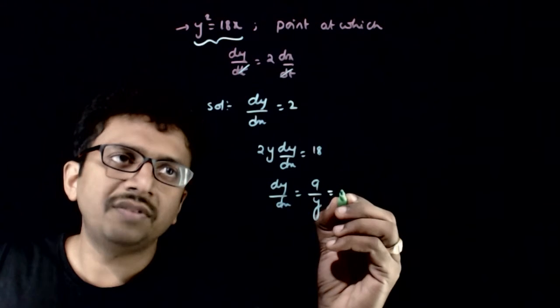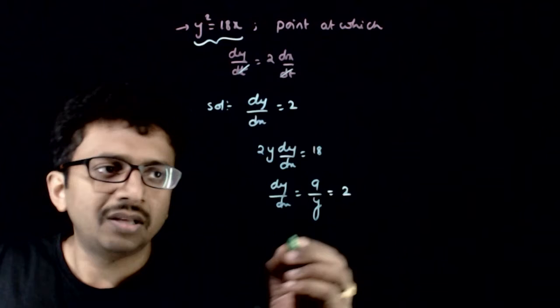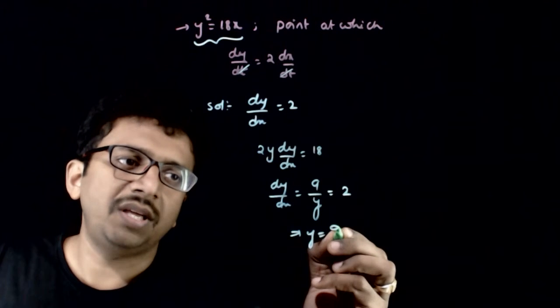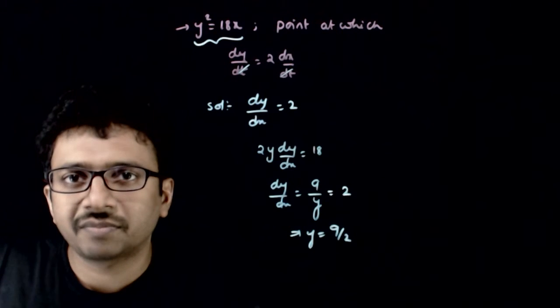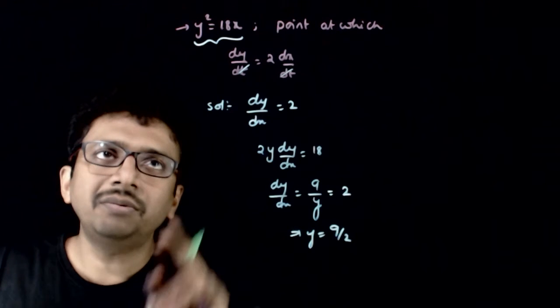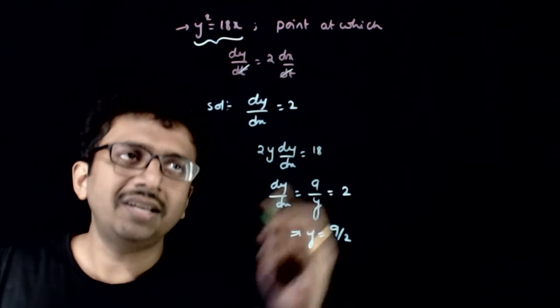So the value of this has to be equal to 2. This implies y has to be equal to 9 by 2. So when y is equal to 9 by 2, dy by dx is equal to 2.